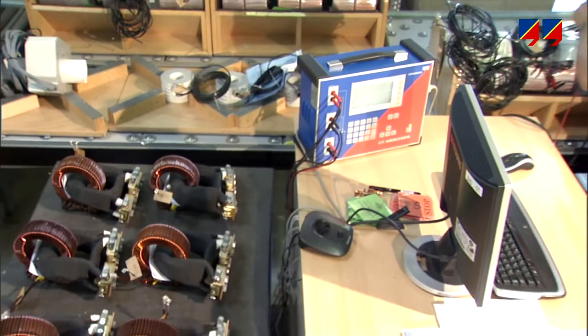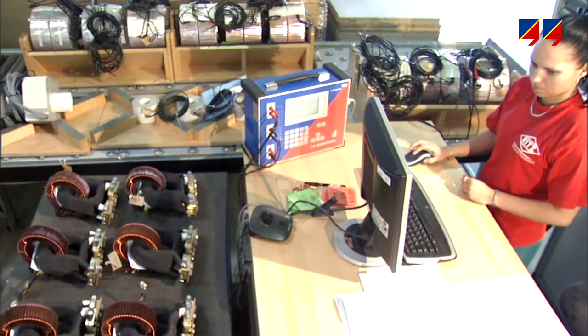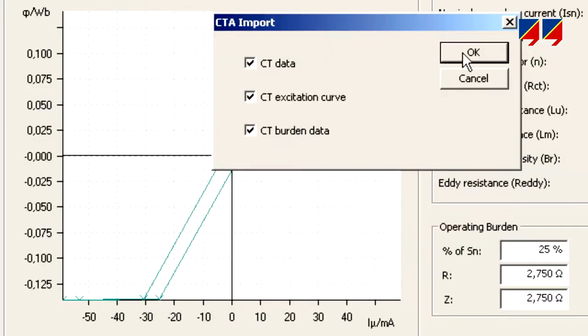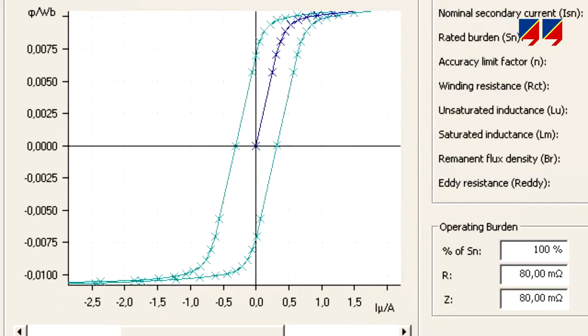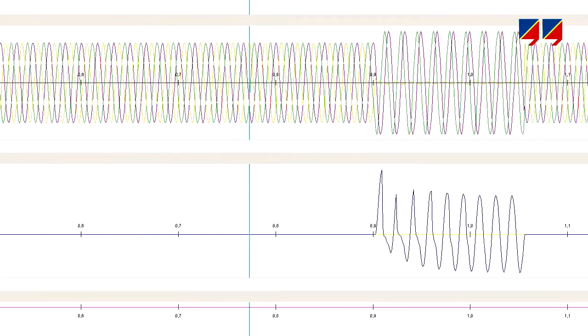CT analyzer can also be operated via PC or laptop, allowing the convenience of working with a mouse and keyboard. The parameters of a measured CT can also be exported to network simulation programs, allowing them to calculate electrical fault currents based on the actual CT behavior.